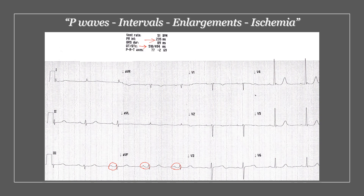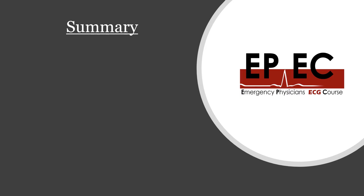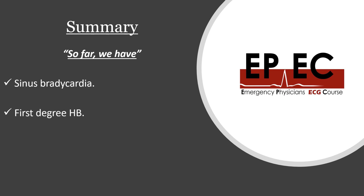So: prolonged PR interval, prolonged QT interval, no specific signs of enlargements in this ECG. And in terms of ischemia, I can say that the T wave is inverted in AVL, inverted in V1 and V2. But I cannot really see any significant ST elevation or depression or Q waves anywhere in the ECG. So in summary so far, we have: sinus brady, a first degree heart block, long QT interval, in addition to some non-specific T wave changes that we've seen in a few leads.